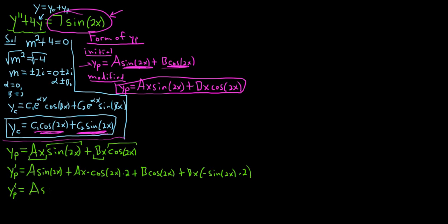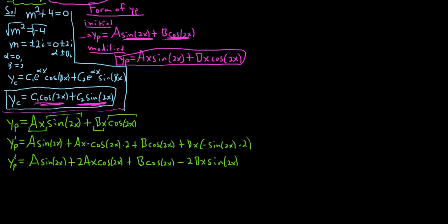Cleaning up Y_P prime: A sine 2X plus 2AX cosine 2X plus B cosine 2X minus 2BX sine 2X. Now we've got to take the derivative of this to find Y_P double prime.